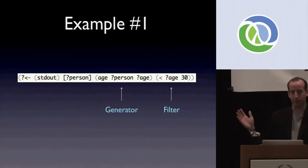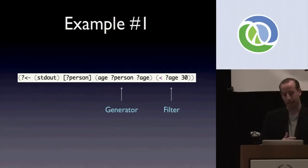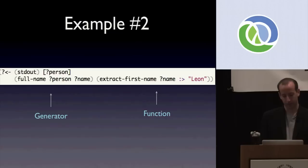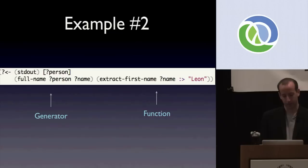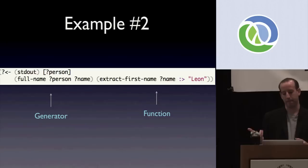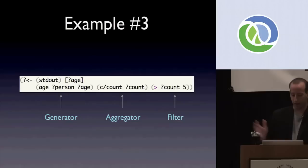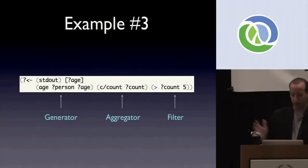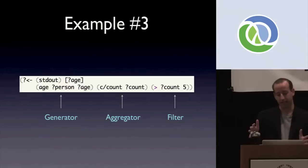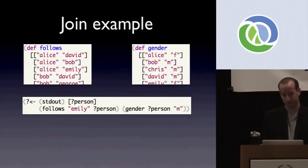Let's look at a few example queries to get the syntax down. The first query gets all people less than 30 years old and contains a generator predicate and a filter predicate. A second query on a full-name dataset gets all person IDs for which the first name is Leon — containing a generator and function predicate. A third query gets all age values that have more than five people associated with them, using a generator, an aggregator, and a filter predicate. All predicates look the same — there's no difference in syntax between different types, and this consistency lets us do some really cool things.